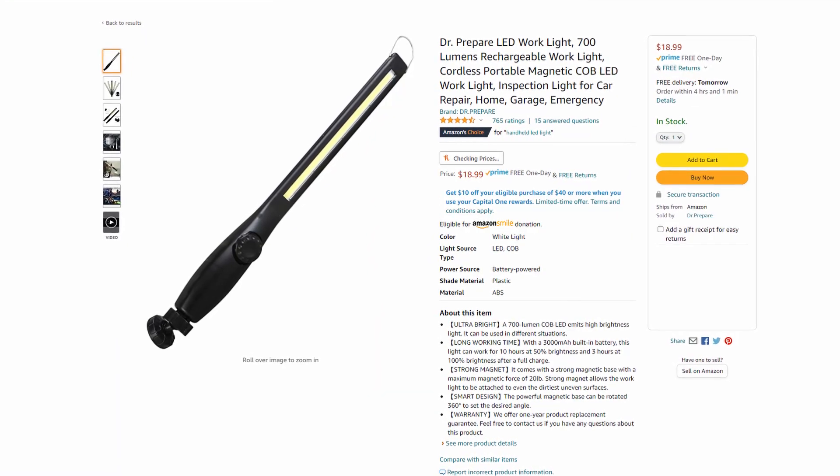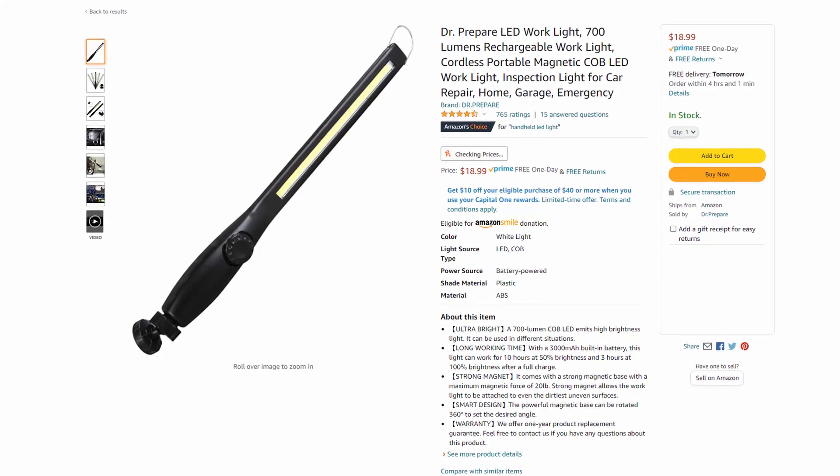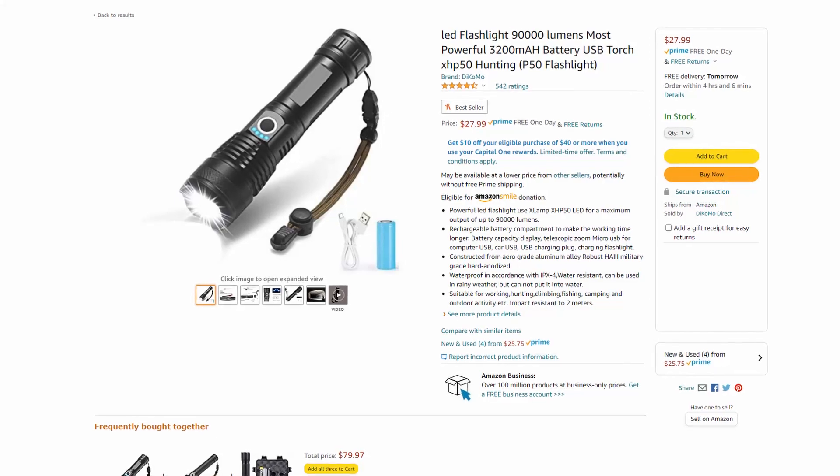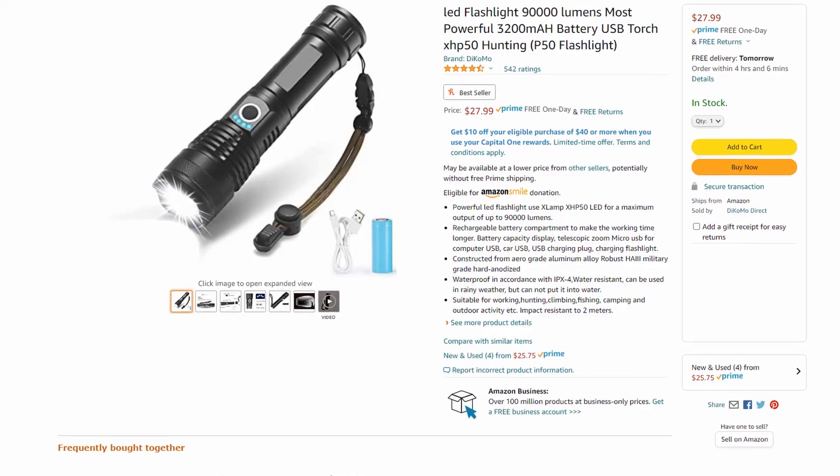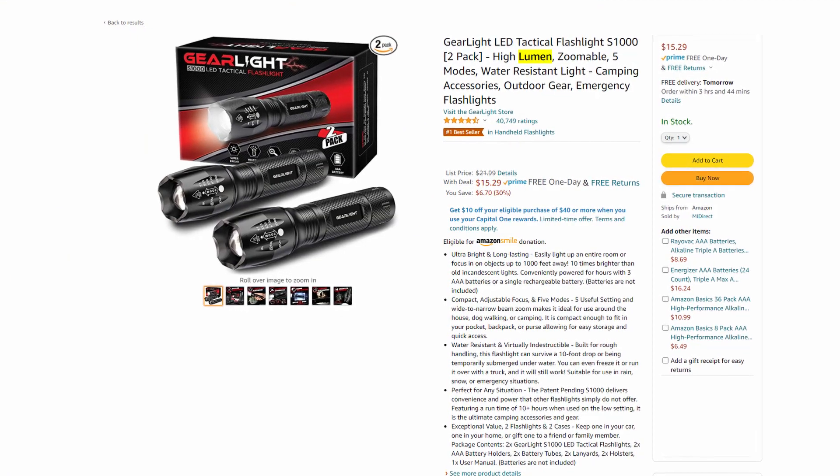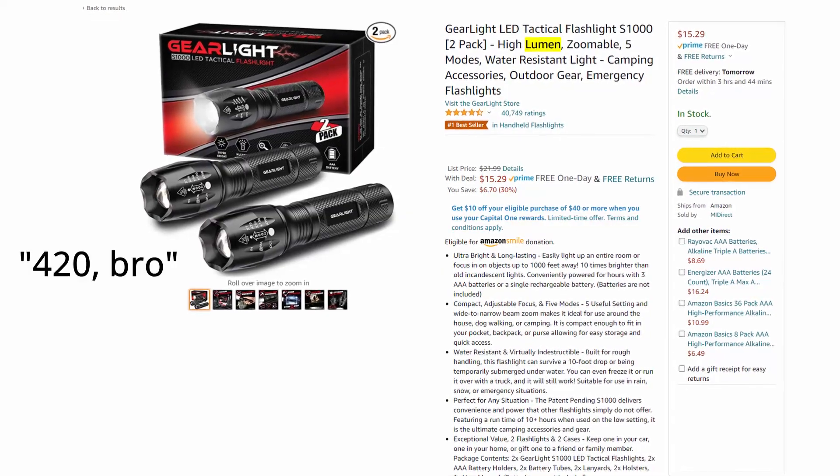This is an $18 Dr. Pepper work light that's 700 lumens. Flashlights are probably the worst though: $28, 90,000 lumen. That would take like 1100 watts to run and it would probably set your hand on fire before a light that size ever approached 90,000 lumens.